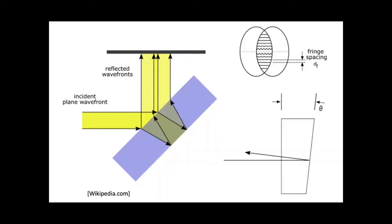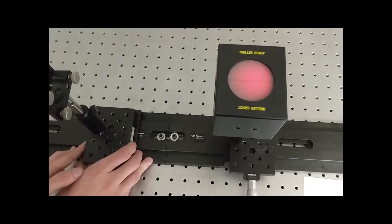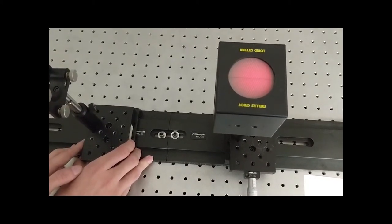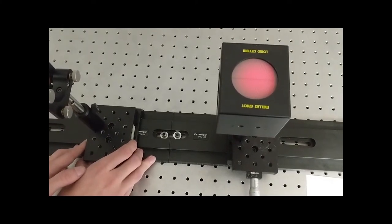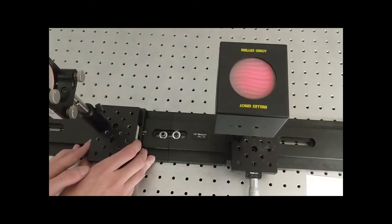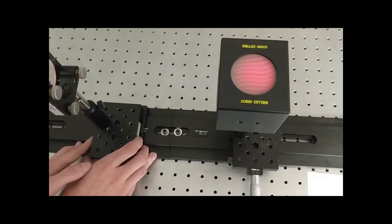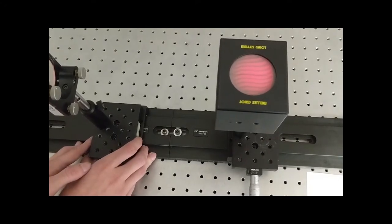We used a wedge shear plate where the two faces are not parallel but offset by a small angle. This introduces an OPD between the two beams even when the input is collimated so we still see fringes. This wedge property also causes the fringes to change orientation when the input beam is converging or diverging.